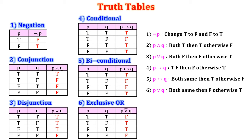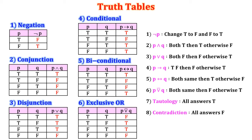So these six are the logical connectives. We use them in problems and in truth tables. Finally, if we get all the answers true, then we say it is a tautology. If the final answers are all false, then we say it is a contradiction. If we have both mixed true and false, then we say it is a contingency.